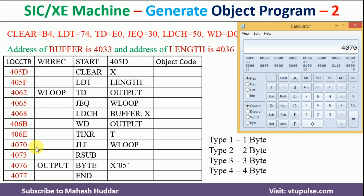Adding 3 to 4073 gives 4076. For RSUB, which is type 3, we get 4076. The next is BYTE, which stores 05 — 4 bits for each nibble, making 8 bits total, which is 1 byte. So we add 1 to get 4077. This completes assigning the location counter values.